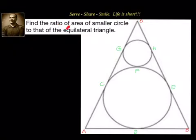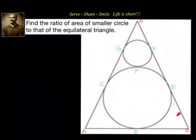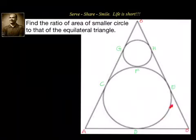Find the ratio of area of the smaller circle to that of the equilateral triangle. Very simple — no numbers, nothing given. We have been given that OAB is an equilateral triangle and we have two circles inside: one incircle here and we have another circle here.